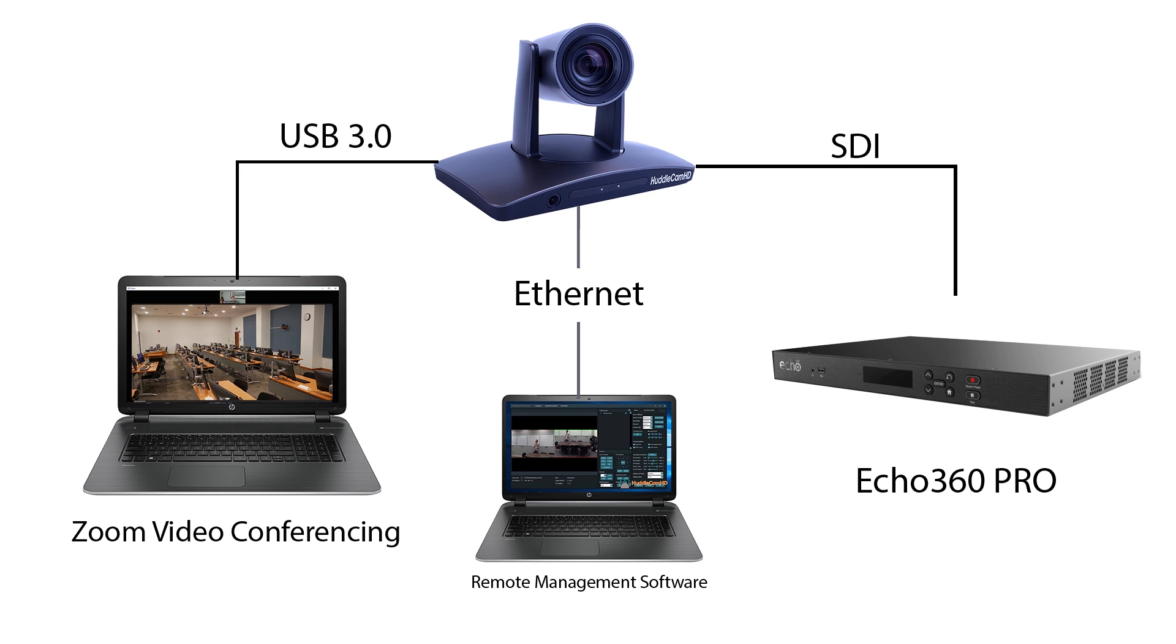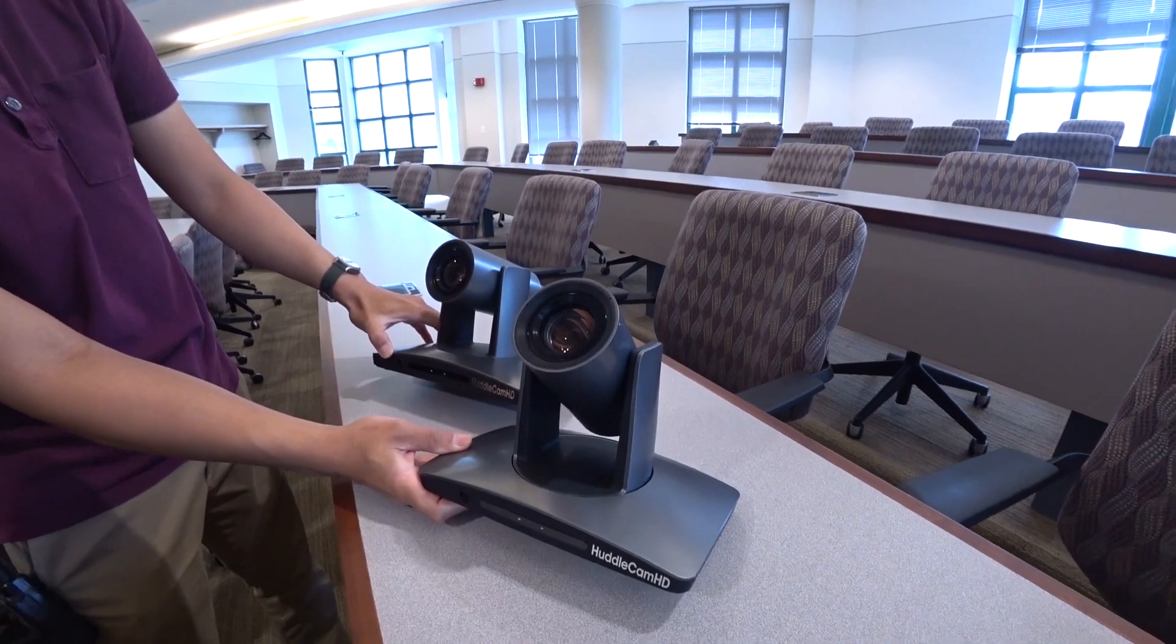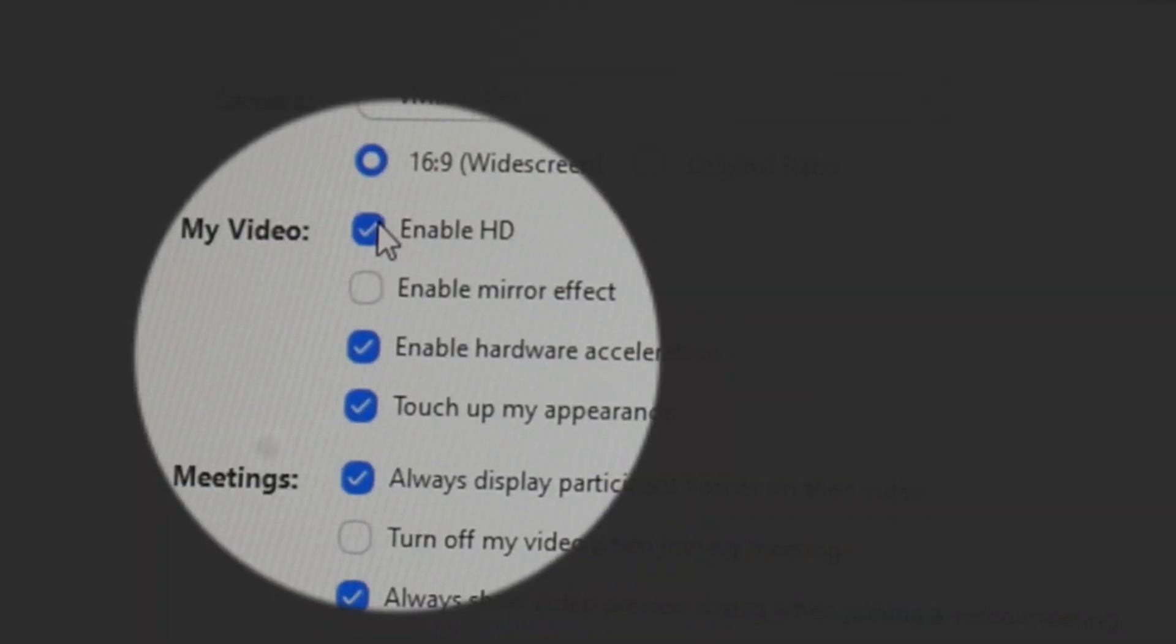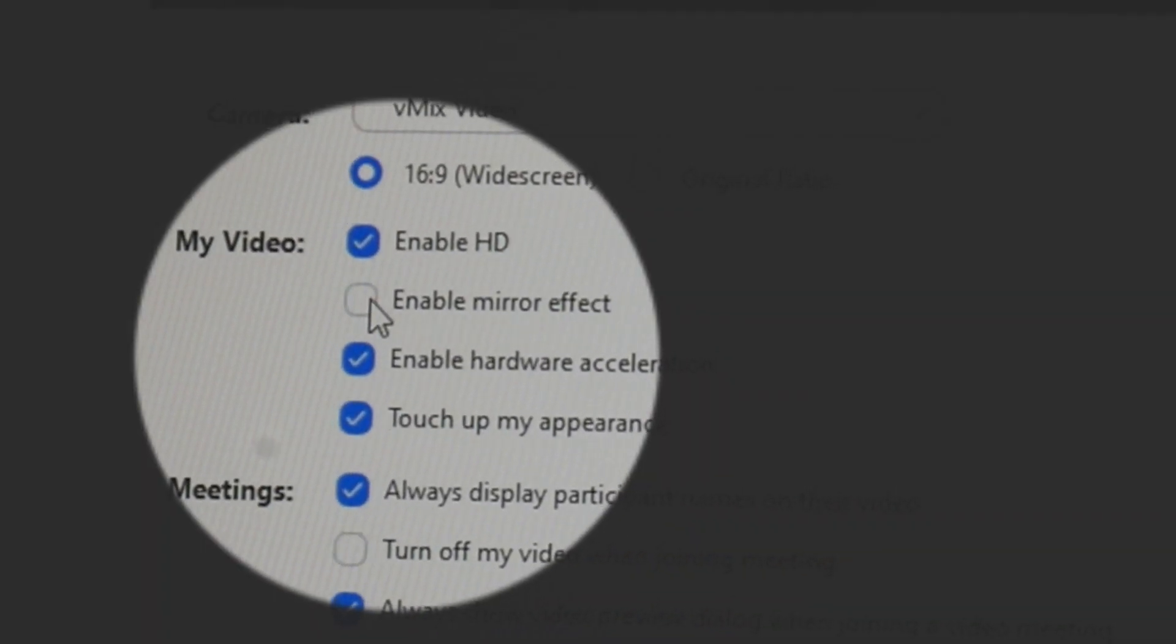Once you have connected your SimpleTrack 2 camera to your computer using USB 3.0, you can select it as your video source in Zoom. Make sure to enable HD mode and turn off the mirror effect as it suits your room.